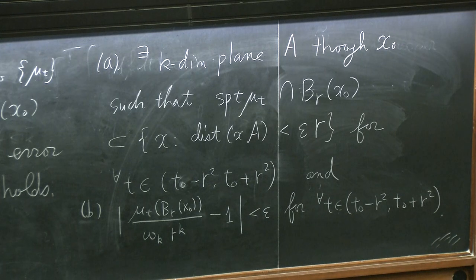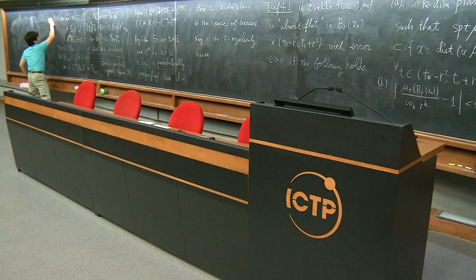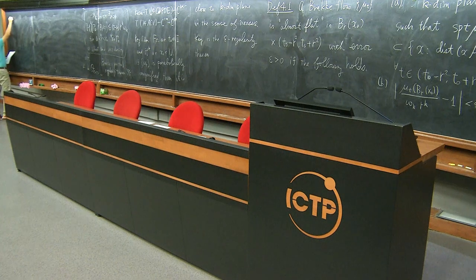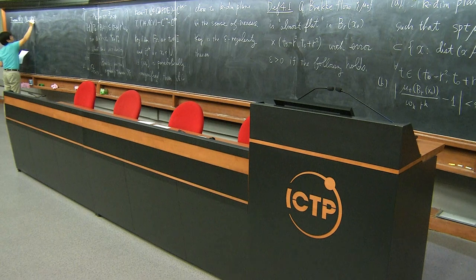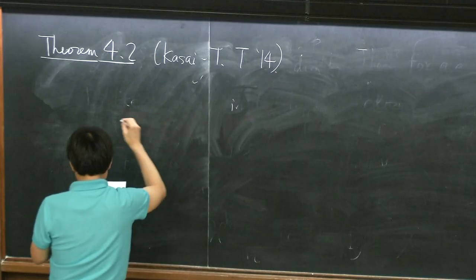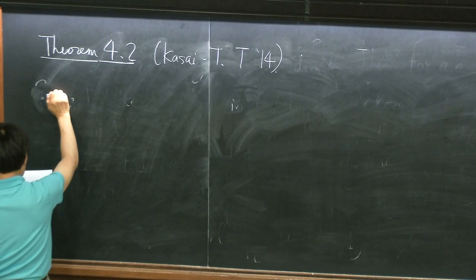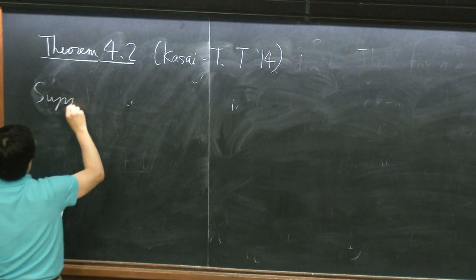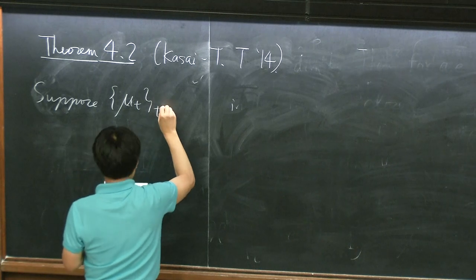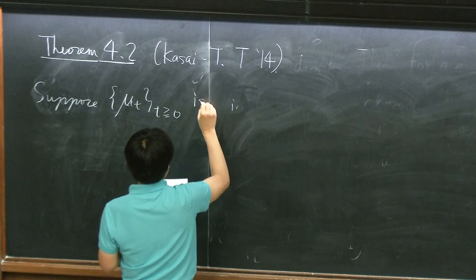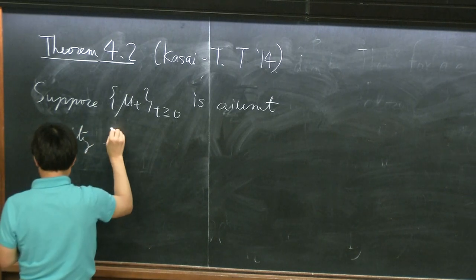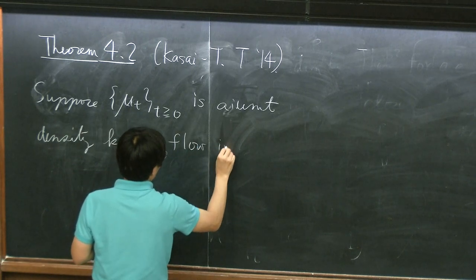Then the conclusion is: if it's almost flat, then it's regular. So the theorem — this is Kasai and T, 2014 — is: suppose we have a unit density K-dimensional Brakke flow in R^n. If you just fix delta, then there exists some epsilon_0 which depends on the dimension, how far you are away from t equal to zero, and the total initial measure, with the following property.